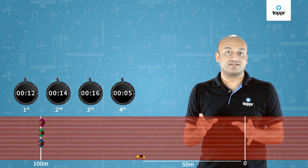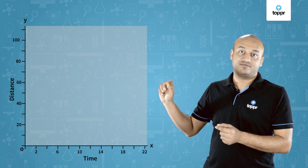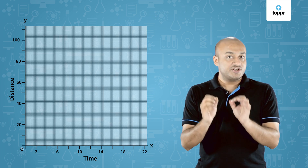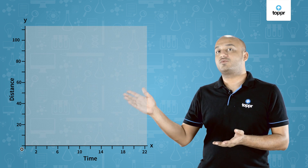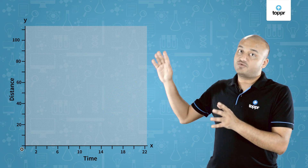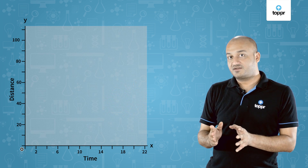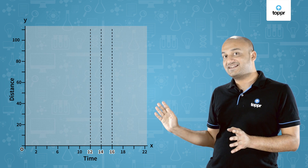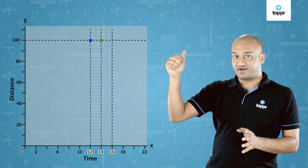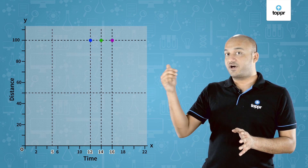Let's look at this on a distance time graph now. We will plot an individual graph for each of the four runners. To plot that we need the initial and the starting point of the lines. The origin — the start point of all four runners — is the same: t = 0 and s = 0, which is the origin point. For the first three runners who finished the race, the time was 12, 14, and 16 seconds and the distance was 100 meters. For the fourth runner, since he only covered 50 meters in 5 seconds, his end point is different.